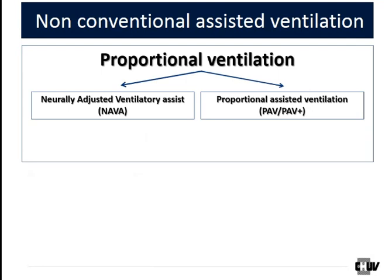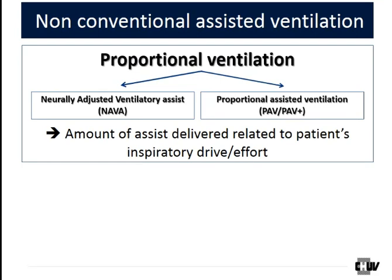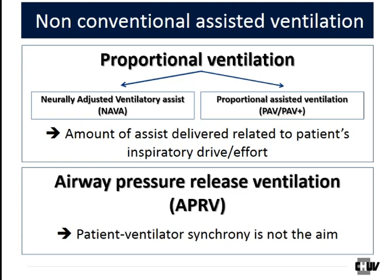Oppositely, during non-conventional assisted ventilation, the goal is a bit different. We are going to talk about two groups. First, proportional ventilation, which includes NAVA — Neurally Adjusted Ventilatory Assist — and Proportional Assist Ventilation, or PAV/PAV+. Those modes have for basic idea that the amount of assist delivered is proportional to the patient's demand, which can be inspiratory drive in NAVA or inspiratory effort during PAV. The other mode is Airway Pressure Release Ventilation, or APRV, where asynchrony is actually the goal.